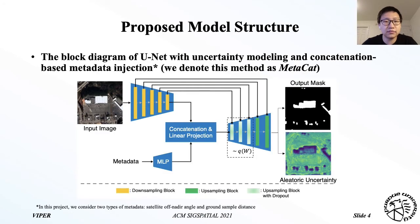This is the model structure of the proposed method. Our model is based on U-Net. To model the epistemic uncertainty, we use Monte Carlo dropout in the decoder. The aleatoric uncertainty is operated along with the segmentation mask. Please check our paper for more details on the model design.